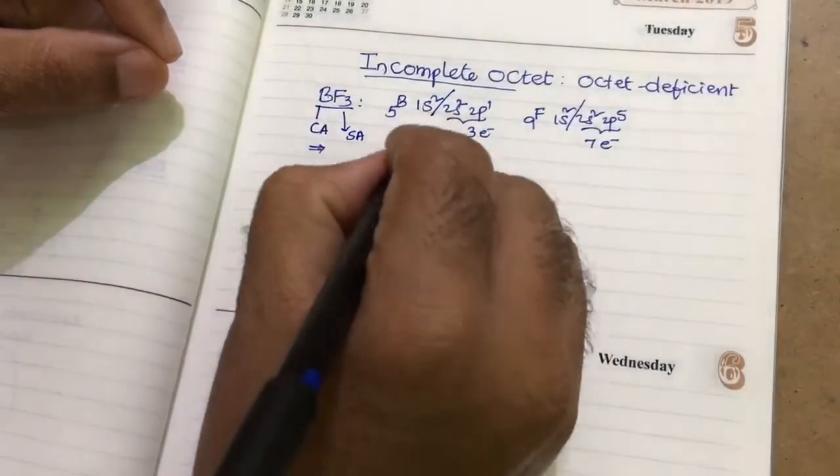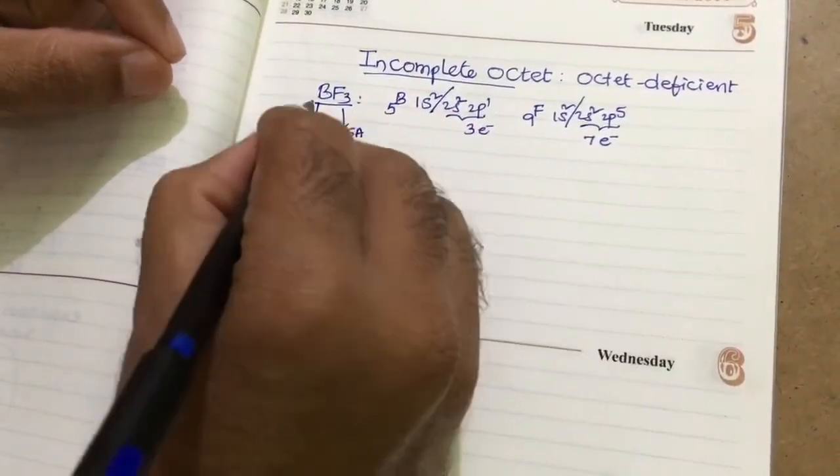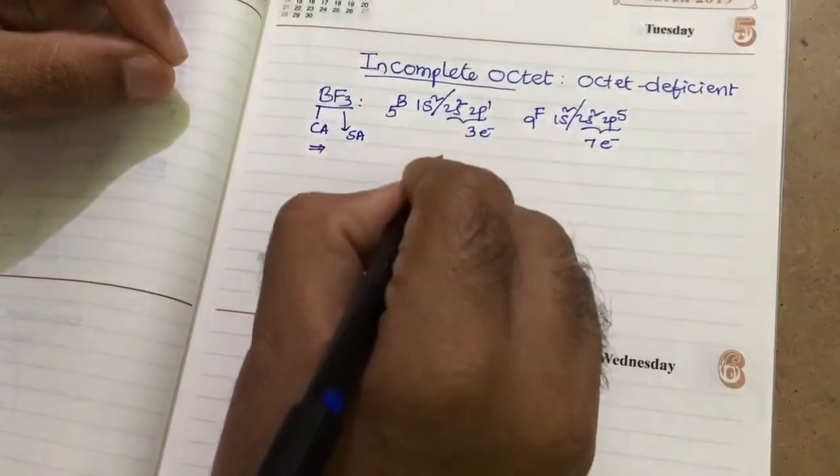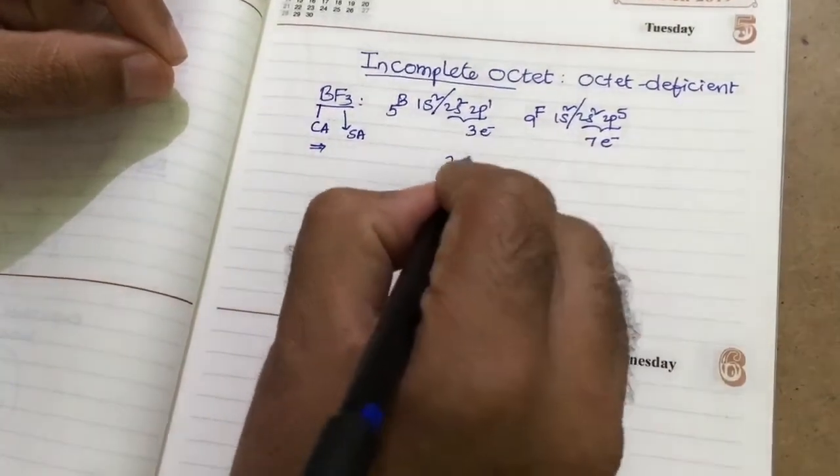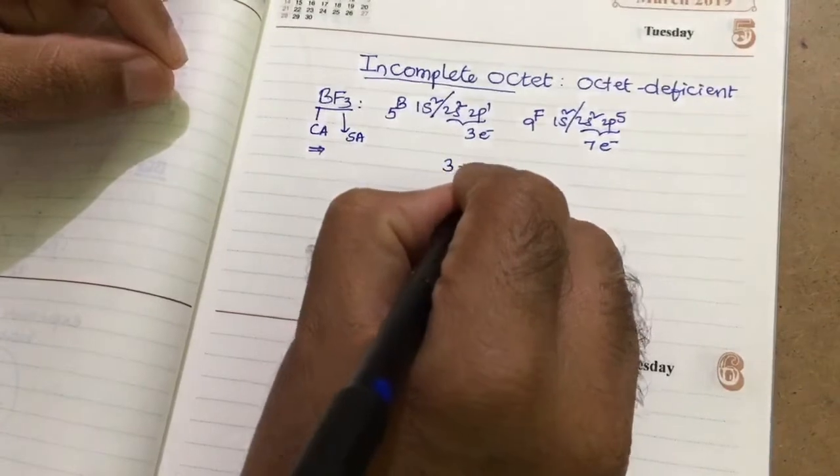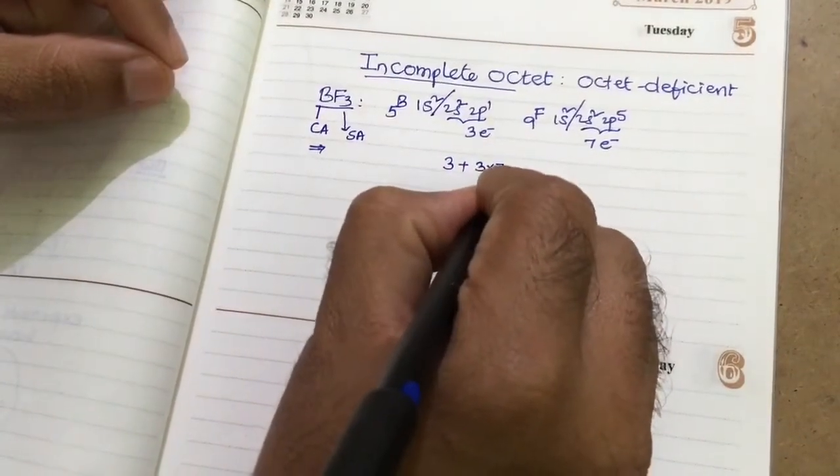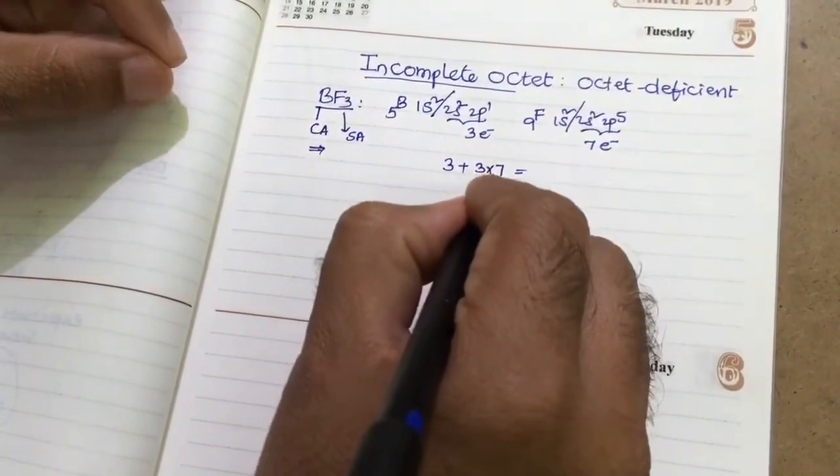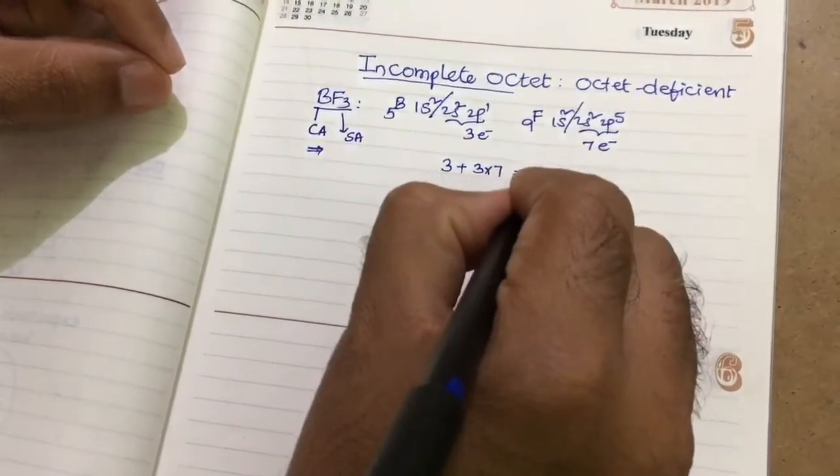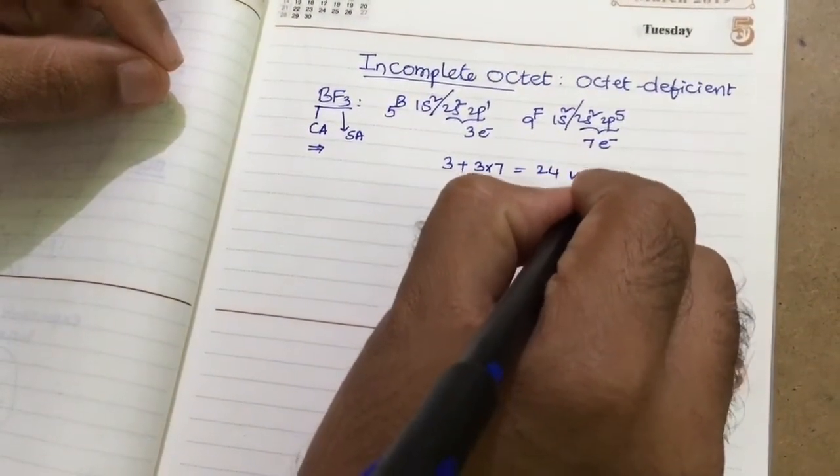Therefore, according to this, 1 boron means valency electrons are 3. 3 fluorine, then 3 times 7. Then total, 3 times 7 is 21, 21 plus 3, total 24 valency electrons.